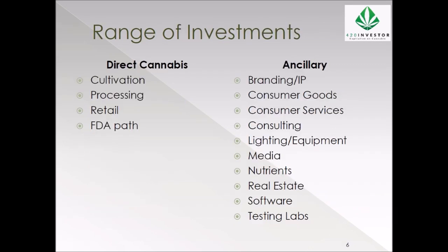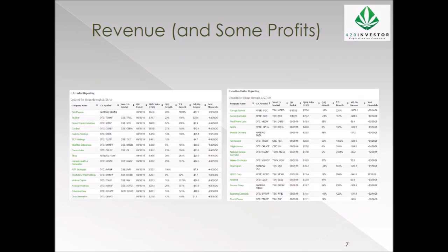You can now invest in a whole bunch of different types of companies. You could go US, Canada, or beyond. There's cultivation, processing, and retail — sometimes all bundled together. There are also companies like GW Pharma that are on the FDA path. On the other side of the market is what I call ancillary — a whole bunch of different segments that cater to the cannabis industry without directly touching the plant. This is an area I think will develop more over time.